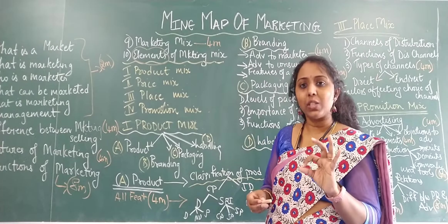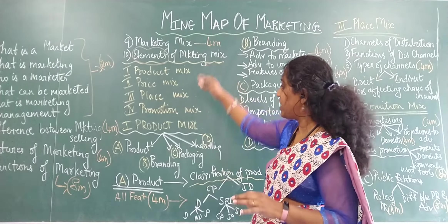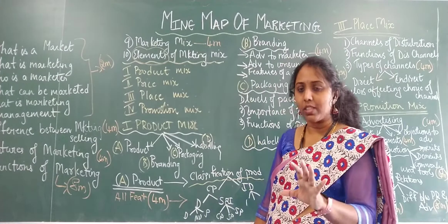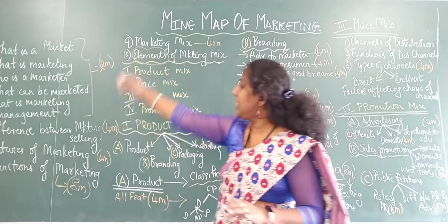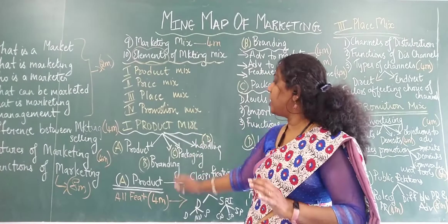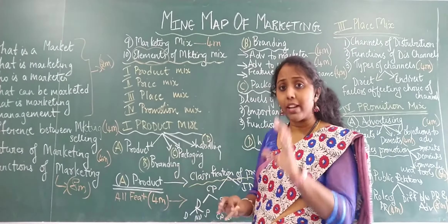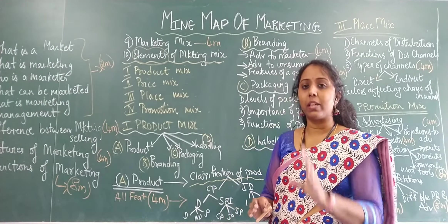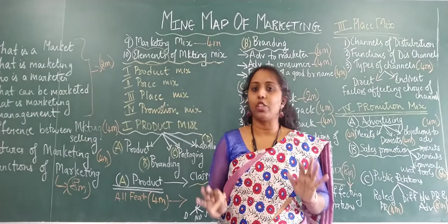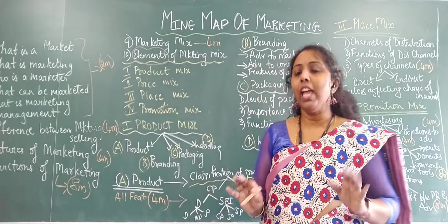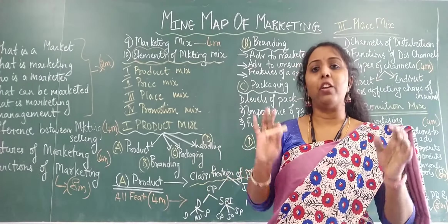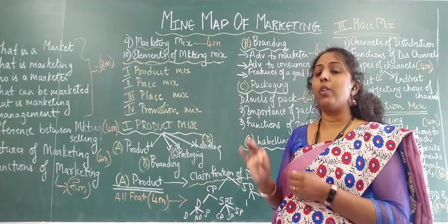That is product, price, place, and promotion. From here, the division of the chapter starts. You need to understand what is coming and where, only then it is easy for you to learn the chapter. Please learn the mind map like you are learning an answer — only then you know what all comes in this particular chapter.